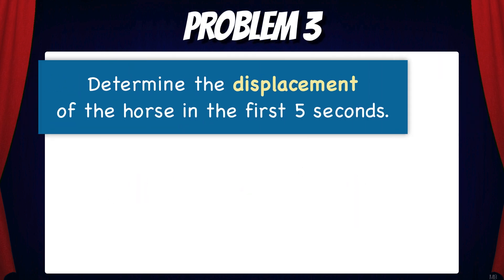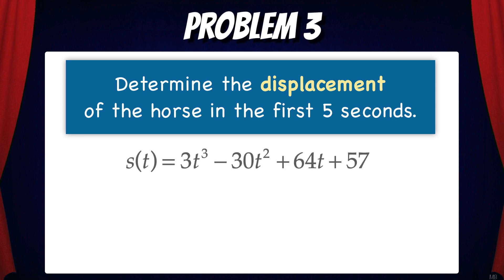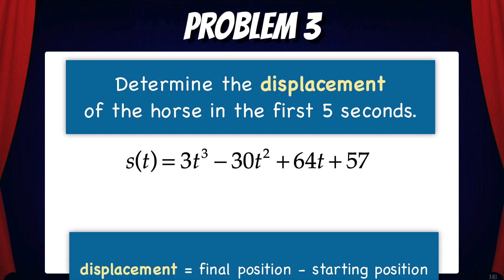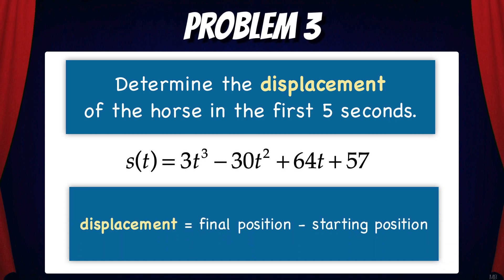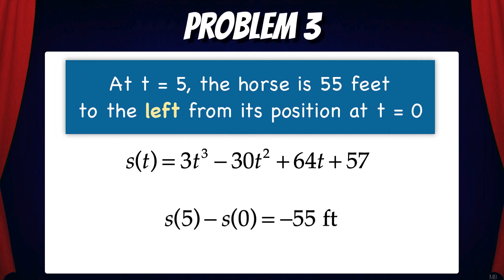Problem 3: Determine the displacement of the horse in the first 5 seconds. To do this we'll use the position function. Displacement is just the final position minus the starting position. So in this case that would be s(5) minus s(0), which equals negative 55 feet. That means at t = 5 the horse is 55 feet to the left from its position at t = 0.